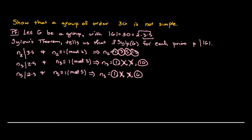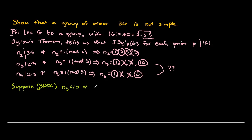For N₂ we've got lots of possibilities — a bit too much to work with right now. But for N₃ and N₅ we have useful criteria. By way of contradiction, let's suppose that N₃ equals 10 — so there are 10 Sylow-3 subgroups — and N₅ equals 6 — so there are 6 Sylow-5 subgroups. From this we can learn about the possible number of elements in our group.